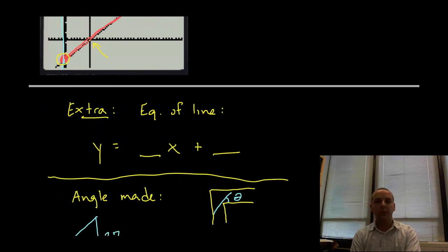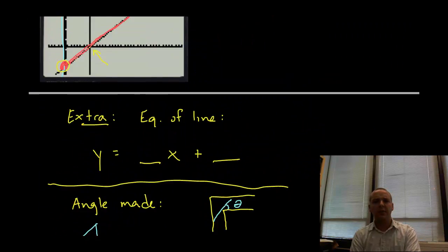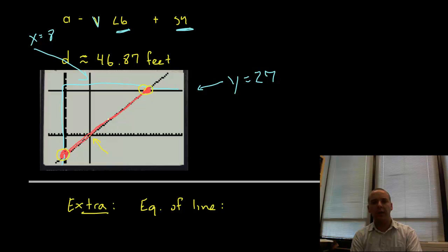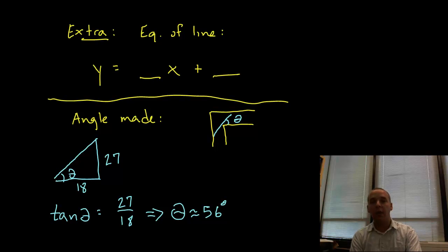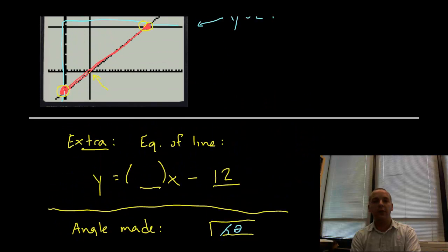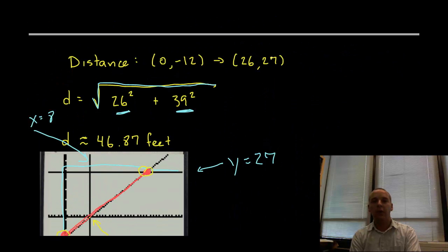A couple of extra things now that we're done. What's the equation of that line here, where we can find these points? How do I know what to plug in the calculator? Well you just need two things for the equation of a line, you need the Y intercept, fortunately we know that is negative 12, so that's one thing. And then you also need the slope, so what's the rise over run between these two points? Well it would be 39 over 26.